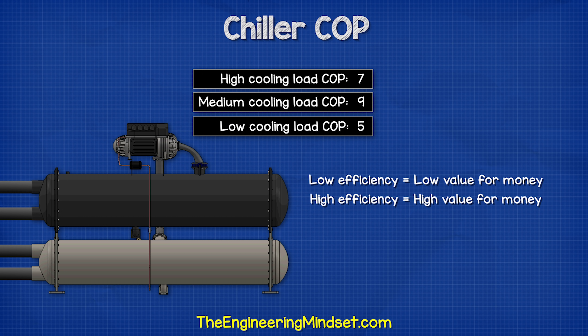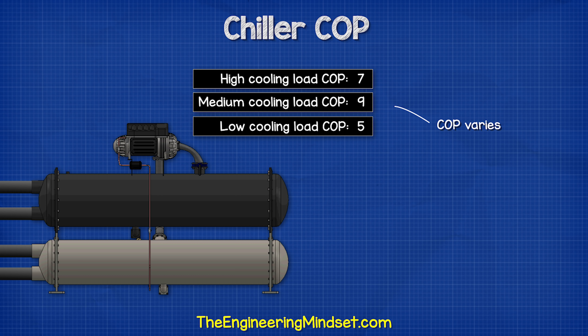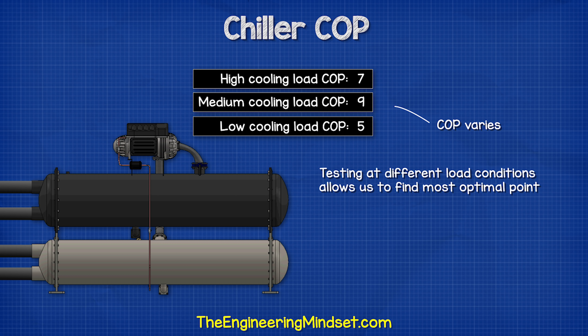One way to do that is by calculating the COP, or coefficient of performance. This will provide a measurement of the system's efficiency at different operating conditions. A very low efficiency means you're getting very little output for your money, and a very high efficiency means you're getting a lot of value for your money. It's good practice to perform calculations at different operating temperatures and loads, and if the building uses multiple chillers, this allows us to find which is the most efficient to run during certain times and conditions.